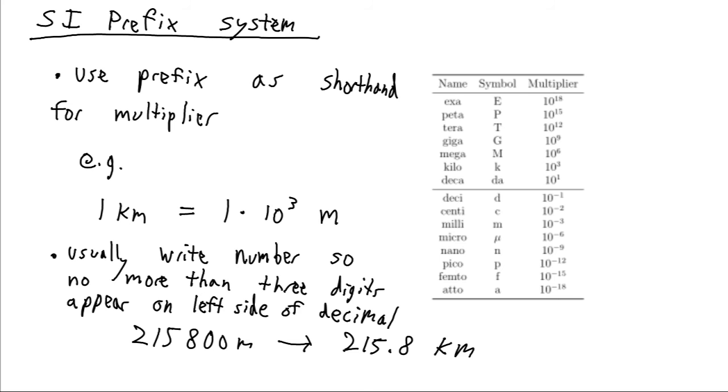We could also go the other direction. So say that we have 0.000046 grams. We have one, two, three, four, five, six places to the right of the decimal. We would like to shift this so that these numbers instead appear on the left side of the decimal. Well, if we look at our factors over here, this micro, represented by the Greek mu, stands for 10 to the minus six. And if we divide this by 10 to the minus six, that will move these digits all the way over there. So this will become instead 46 micrograms, where micro stands for multiply by 10 to the minus six.